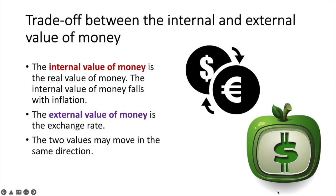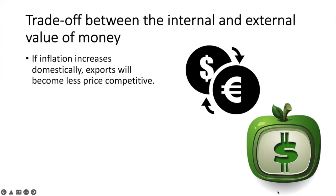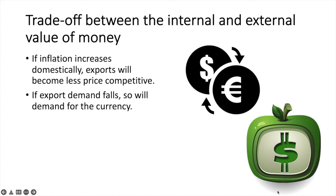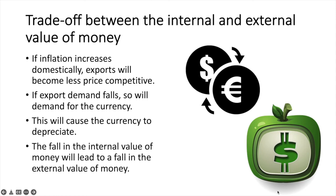To understand why, let's look at an explanation. Suppose inflation increases in a country — its exports will become less price competitive. If export demand falls, so will demand for the currency. This will cause the currency to depreciate. From this, we can see that a fall in the internal value of money can lead to a fall in the external value of money.